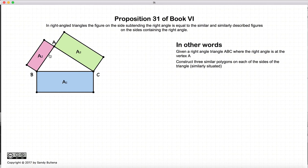This proposition states that the area of this polygon plus the area of this polygon is equal to the area of that polygon. In other words, it's a more generalized Pythagoras' theorem. If these were all squares, we would have the sum of the squares on the sides equal to the sum on the hypotenuse, but it can be generalized to any figure as long as the figures are similar.